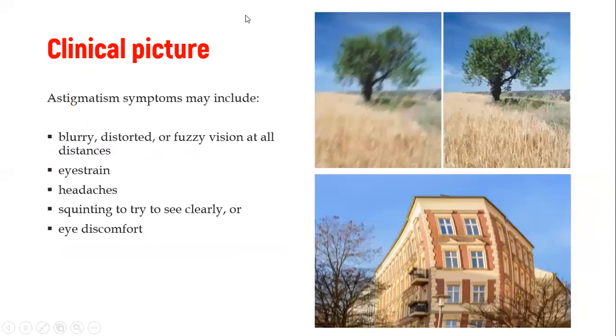So the clinical picture, we've already alluded to this. We expect to see blurry, distorted, fuzzy vision, and it's because of the different focal points we are having on the retina. As you can see, this is in a normal eye, but this is an eye with astigmatism. And you can see how blurry the image is. This other image is showing the distorted kind of image you might get, or warped kind of image. And it's because of the different focal points we are having. So apart from that, we might have eye strain, headaches, squinting to try to see clearly, and other eye discomfort.